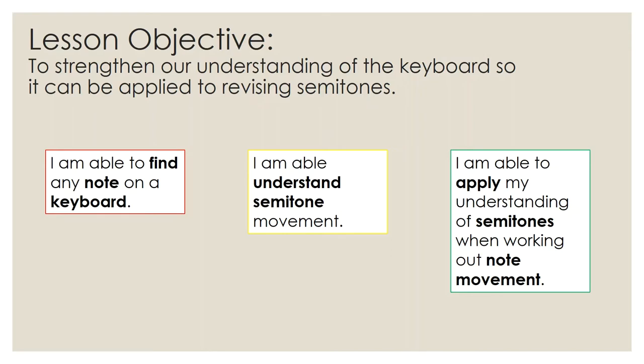Once you're able to do this, in the green box on the right, you are able to apply your understanding of semitones when working out note movement. So working out from one note to the next and working out a different note as we ask you to work out a note like C. What is a semitone away from that? You need to be able to understand that it's going to be C sharp.